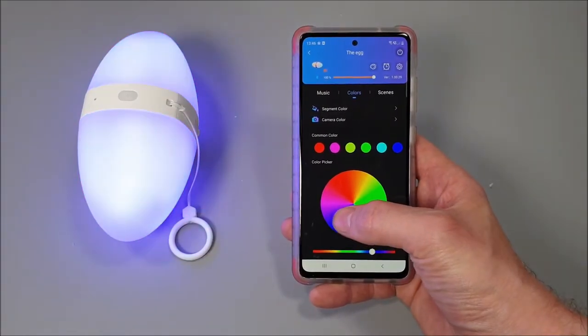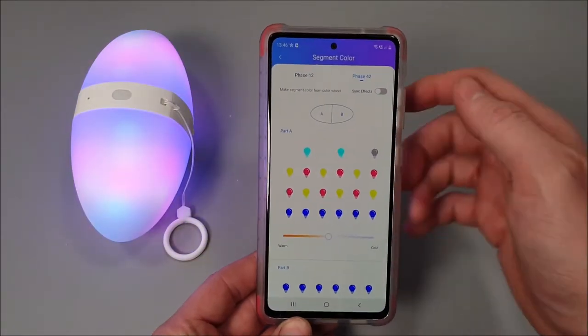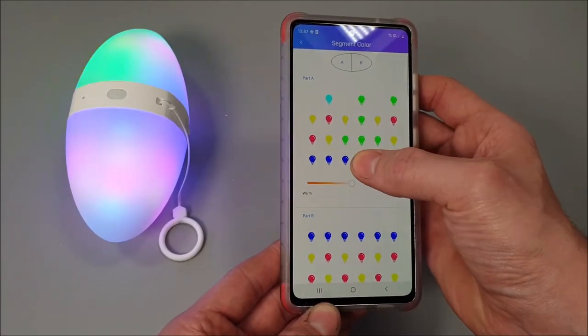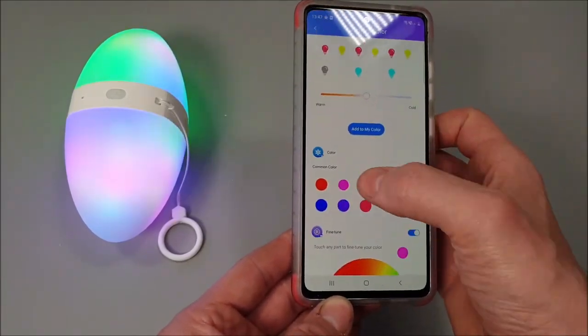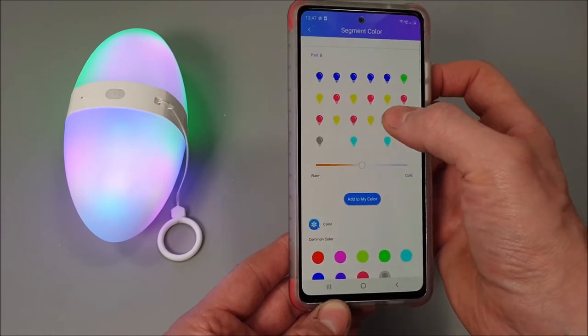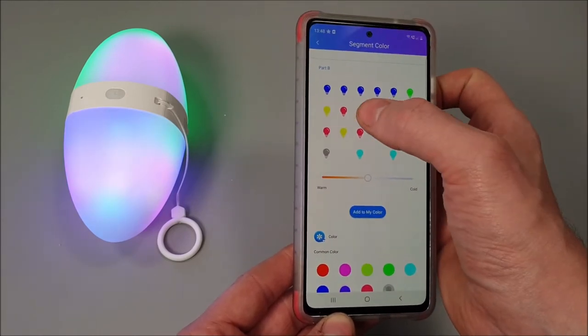What is good is that there is a segment color choice option too. You've got side A and side B. You're able to personally select each one of the LED segments, so you can choose one half to be red or one half to be green.